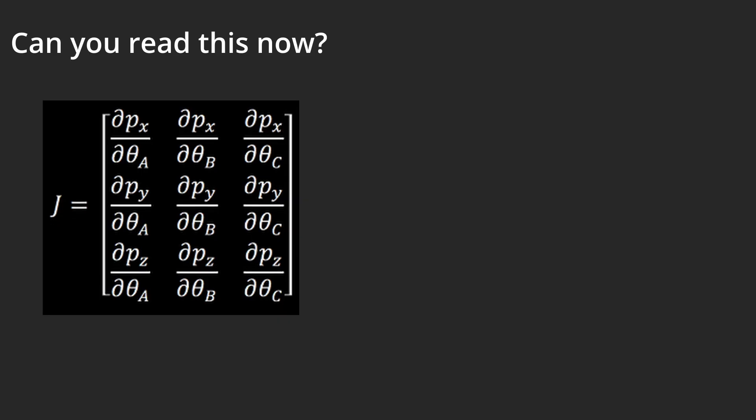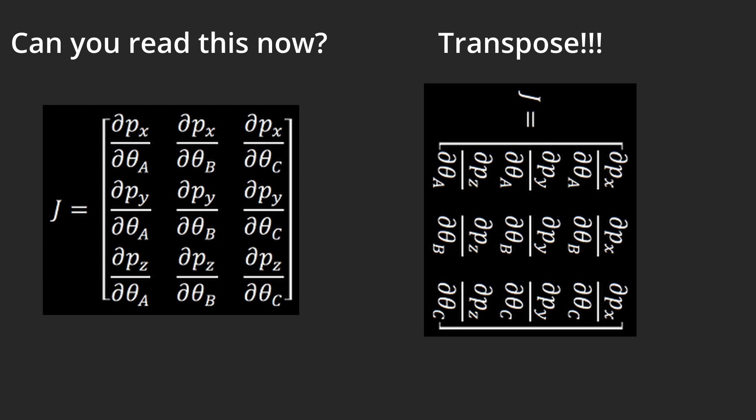Anyway, for the transpose, we just take this and flip it around. So that the rows are the joints and the columns are the end effector data.